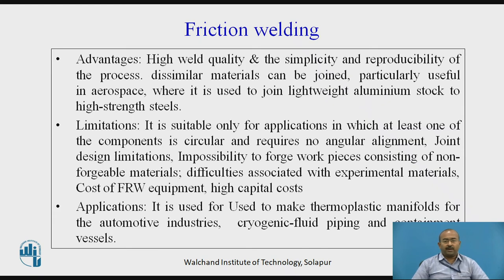Advantages of friction welding: high welding quality, simplicity, and reproducibility of the process. Dissimilar materials can be joined very easily — particularly useful in aerospace, where it is used to join lightweight aluminum stock to high-strength steels. Limitations: it is suitable only for applications where at least one component is circular and requires no angular alignment. Joint design limitations exist, impossibility of forging non-forgeable materials, difficulties with experimental materials, and the cost of friction welding equipment is high.